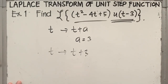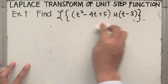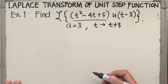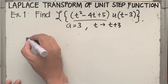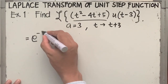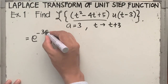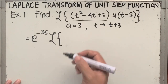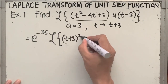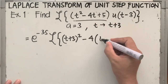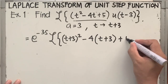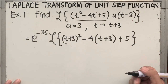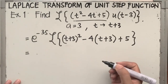This is the f of t in our given. Since this is a unit step function, the Laplace transform equals e raised to minus as — in this case, e raised to minus 3s — times the Laplace of f of t plus a. That means replacing t by t plus 3, so the first term becomes t plus 3 squared, minus 4 times t plus 3, then plus 5. This is the expression inside the operator, and we no longer write u of t minus 3 since we have e raised to minus 3s.